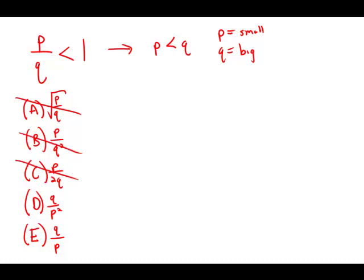Now in D and E, what we do is we take q over p. Well, that's big over small, that's actually the reciprocal. Big over small would be something larger than 1. At least E would be.